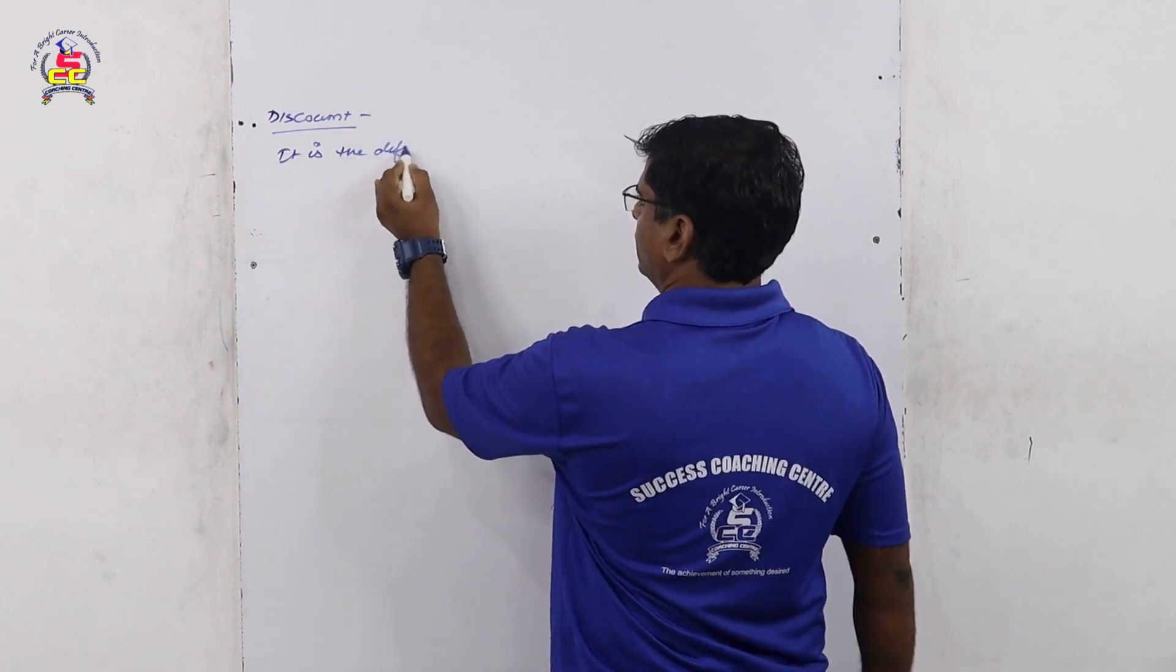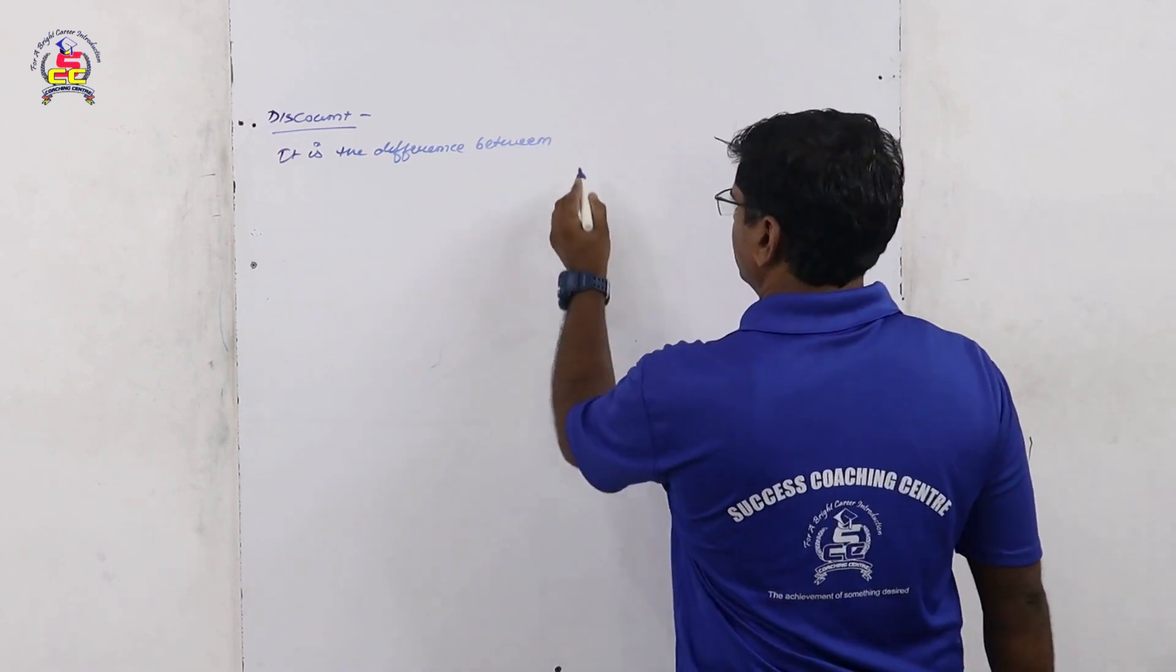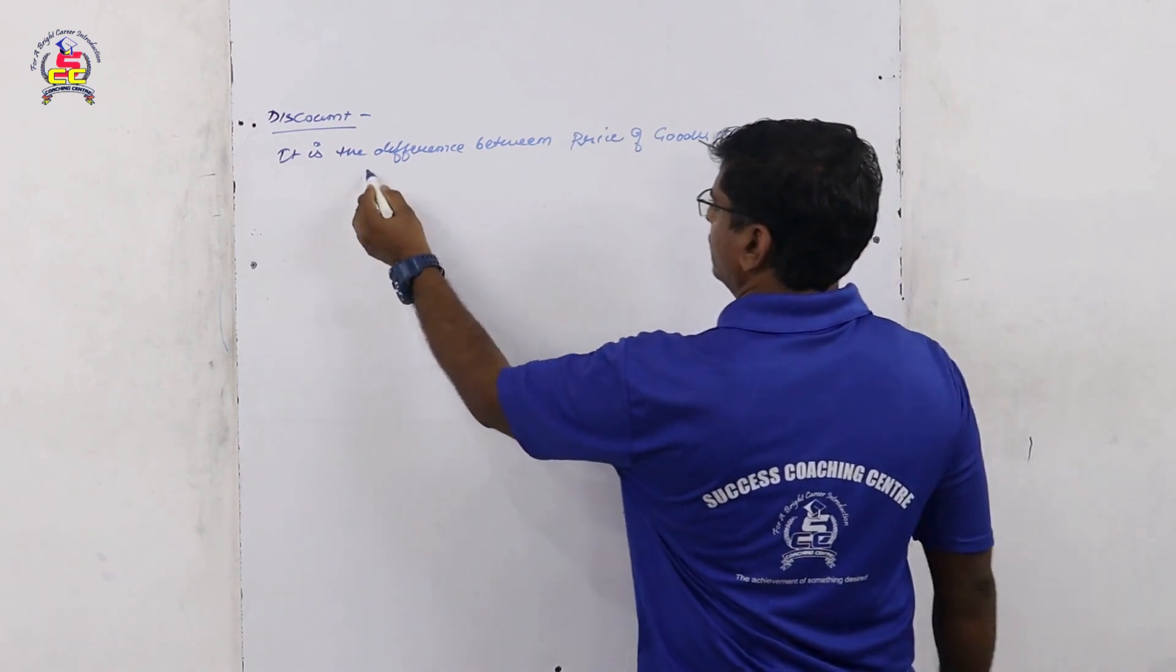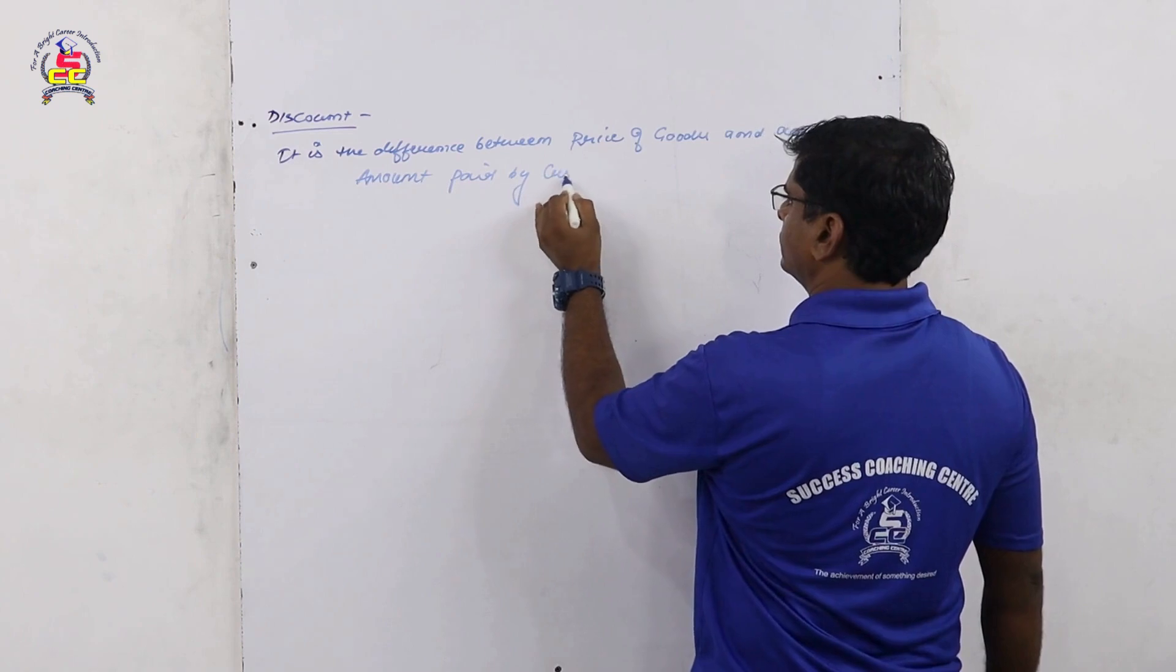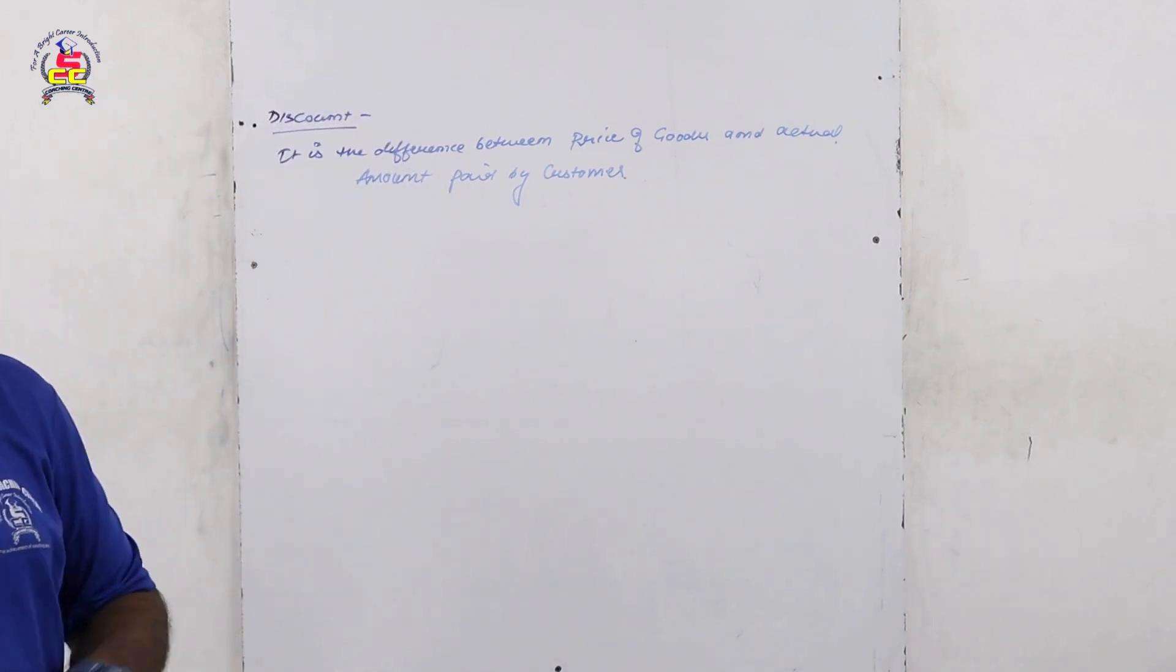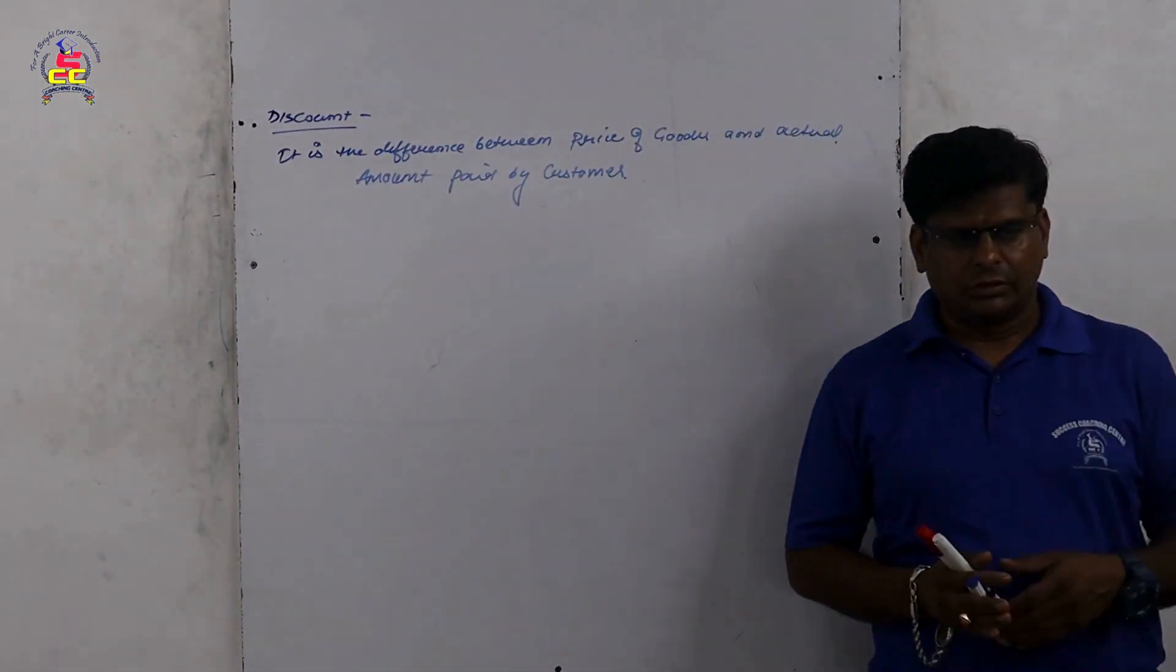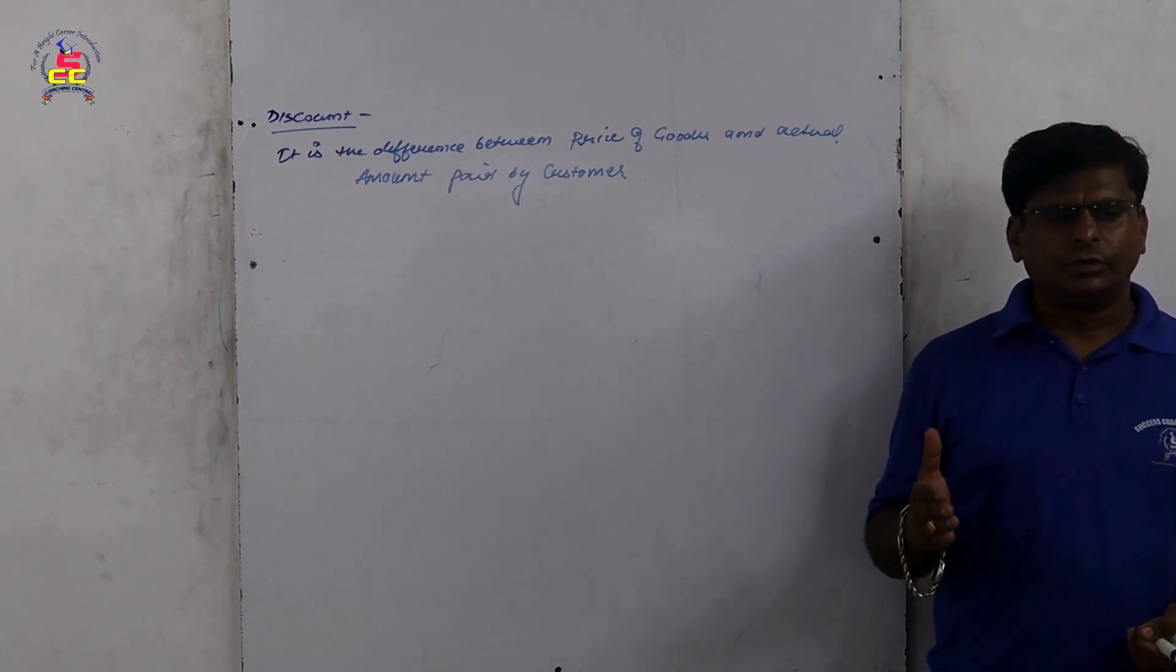It is the difference between price of goods and actual amount paid by, that is called this amount. The price of goods and actual amount paid by the customer.